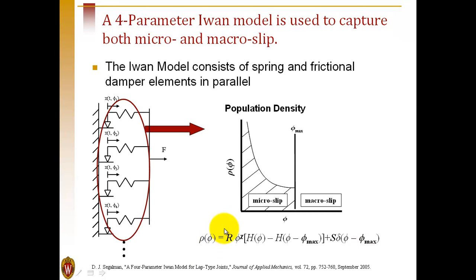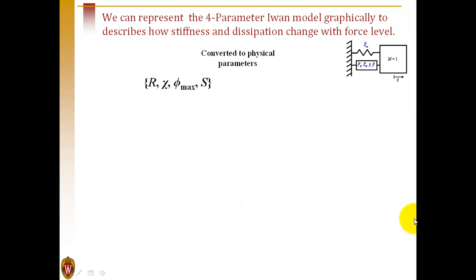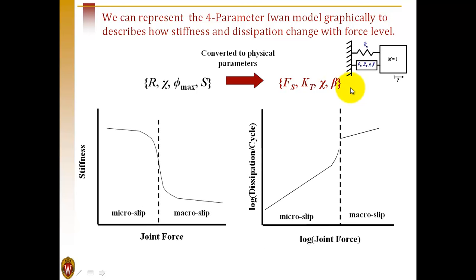The population density is governed by four parameters, and usually it's convenient to convert those to four parameters that are more physically meaningful.